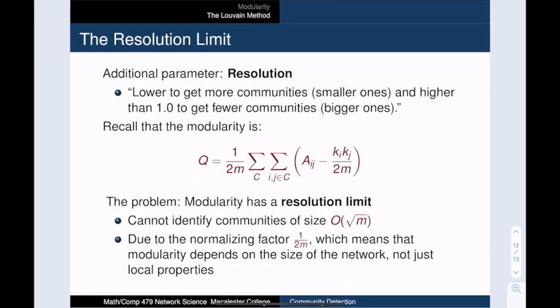So here's the problem with modularity. When we're calculating this value, we actually divide by twice the number of edges. And this will actually prevent us from finding small communities, in particular, communities that are of size square root of m or smaller. But there is a way to correct for this when needed.